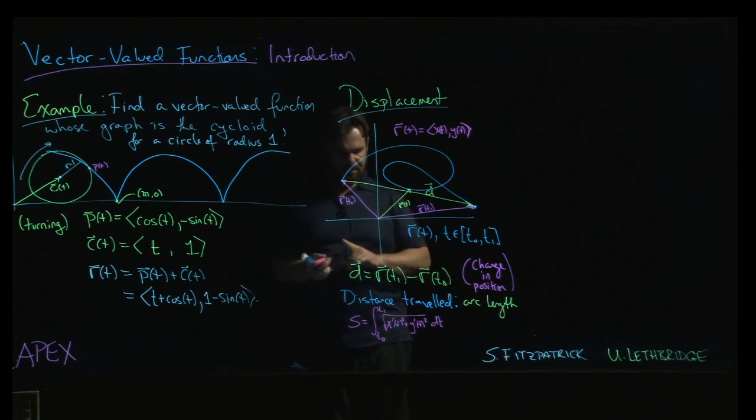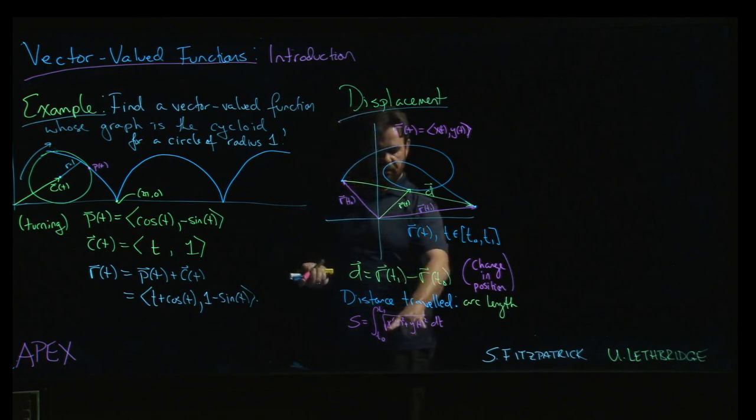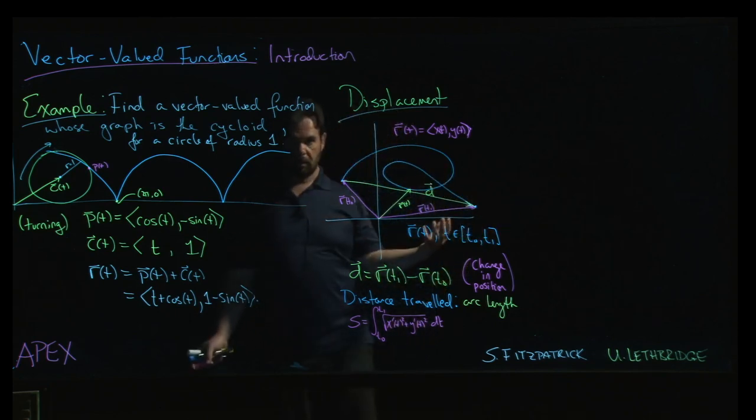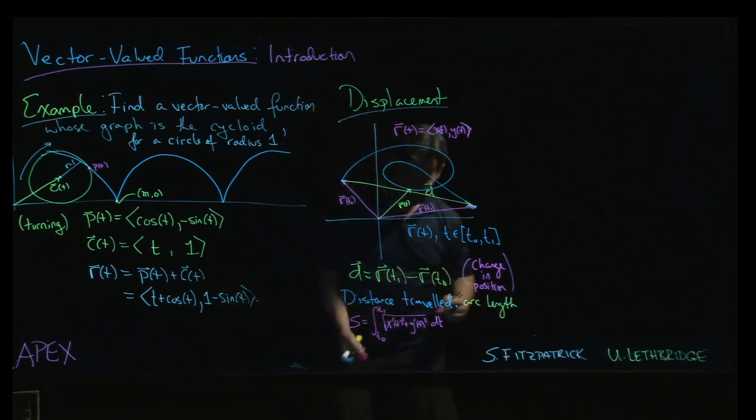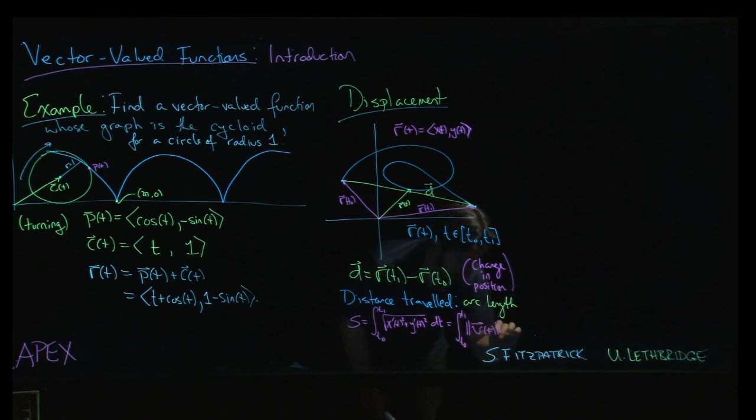By the way, this expression that you integrate when you're computing arc length might look familiar to you. Now that we've kind of talked about vectors, you're familiar with vectors and vector terminology. That's just a magnitude. This is just the integral from t0 to t1 of the magnitude of, well, let's call it v(t), the velocity. I mean, we're not quite there yet, or we can also call it r prime.